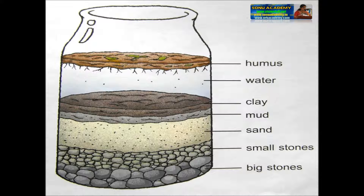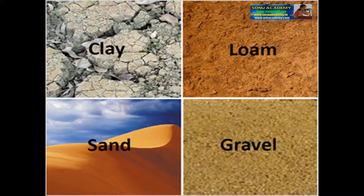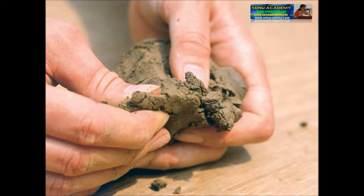Floating on top will be dark brown pieces of humus. Let us see the types of soil. Children, you have seen a potter making pots. The soil he uses is soft and can be easily shaped. It contains very small, smooth particles and consists mostly of clay. Such soil is called clayey soil. Clayey soil is very sticky, water cannot pass through it easily, and it holds a lot of water. It has no spaces between particles to hold air. Therefore, plants cannot grow properly in clayey soil.